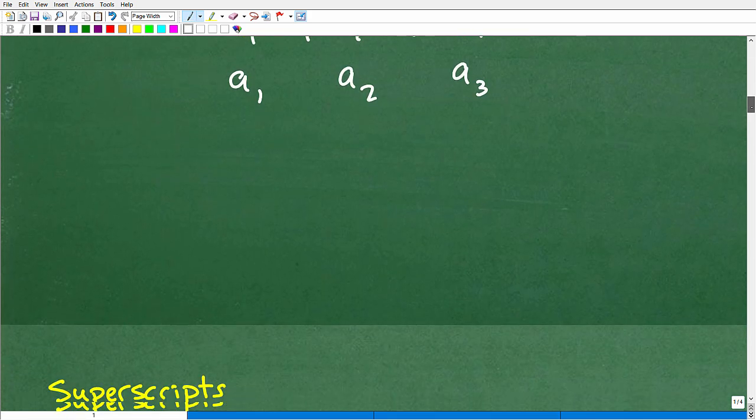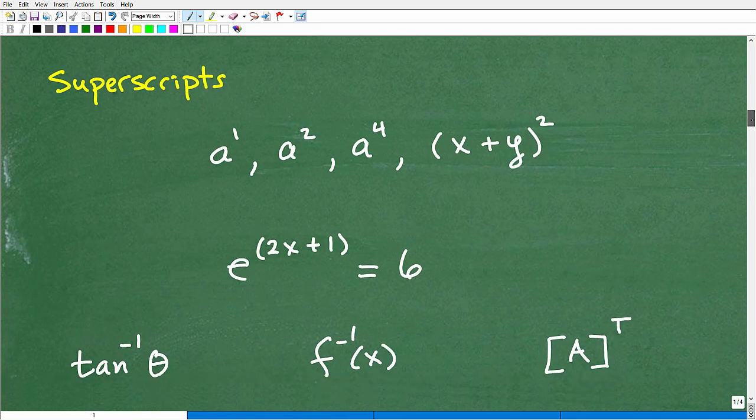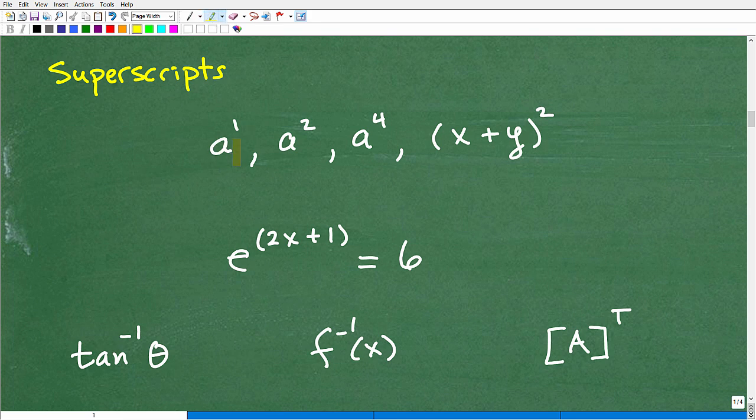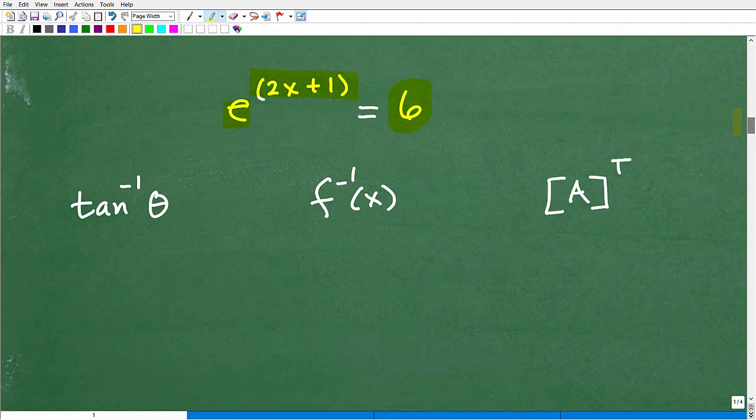So I think we kind of covered the one that confuses people the most. Let's talk about superscripts. So superscripts are basically powers and exponents, the way you look at it. But there's other things we can do with superscripts. So that's when the number is in the top right. This is A to the first power, A to the second, A to the fourth. This is X plus Y squared. Here we have E to the 2X plus 1 that would be classified as a superscript.